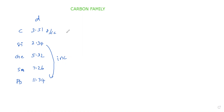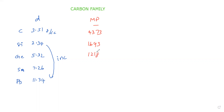Next we will see the melting point of these elements. Melting point: carbon 4373 Kelvin, silicon 1693, germanium 1218, tin 505, then lead 600. So melting point values are like this.